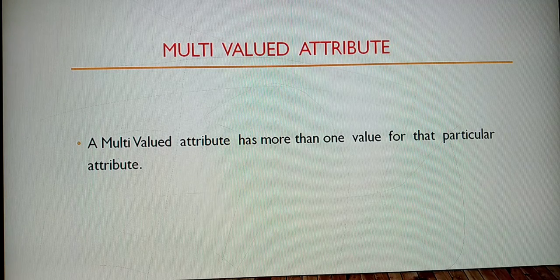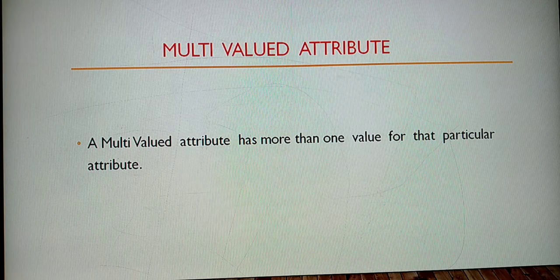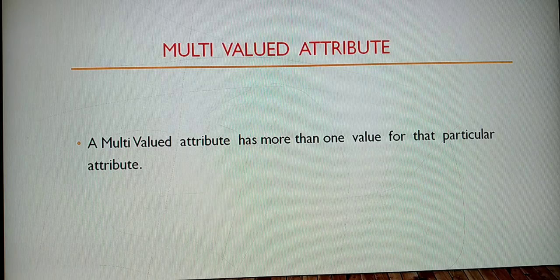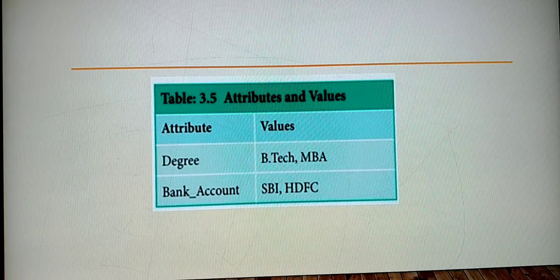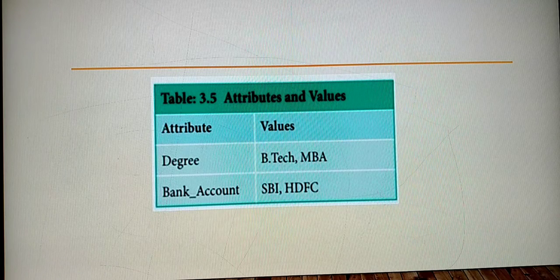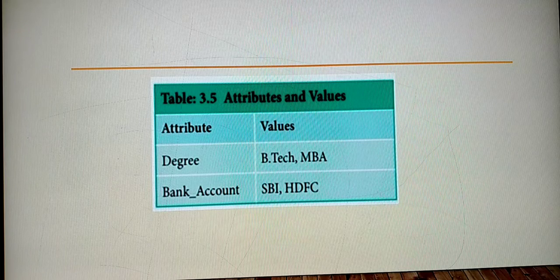A multi-valued attribute holds many values for a single attribute. For example, a single person can have many bank accounts. Similarly, a single person can have many degrees. These are examples of multi-valued attributes.